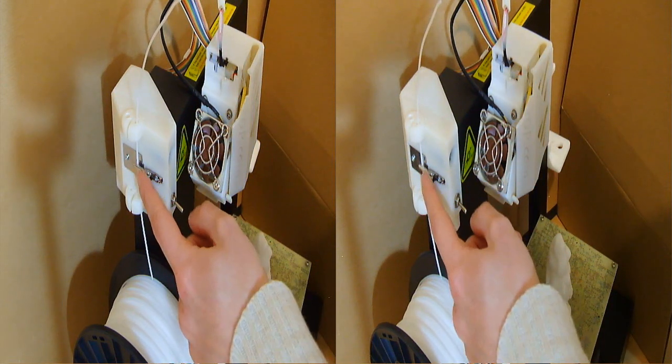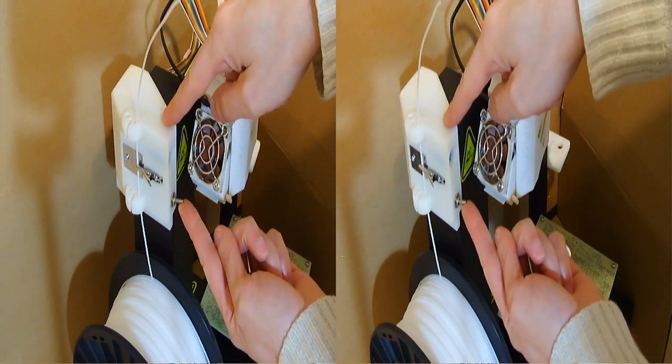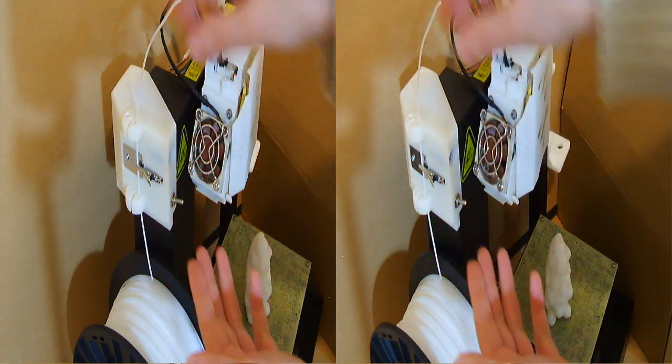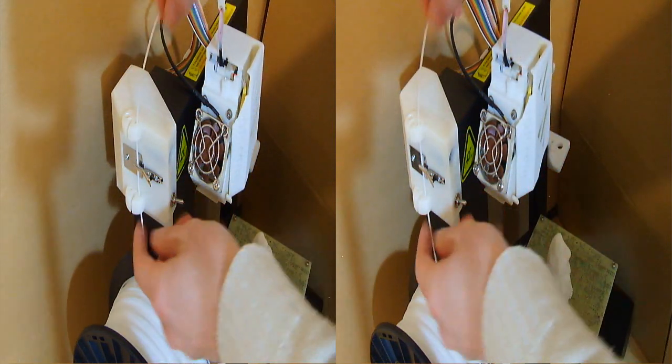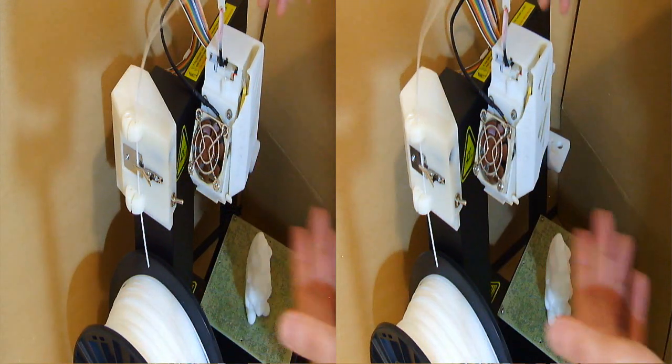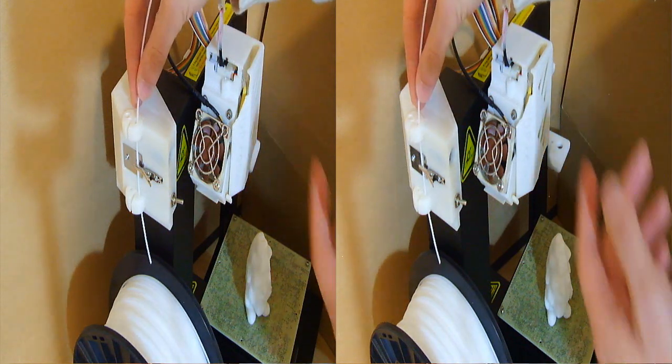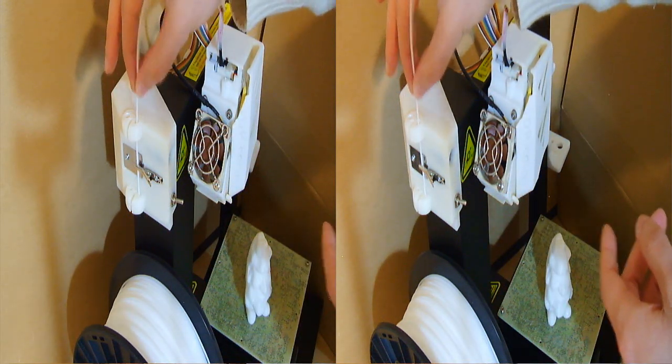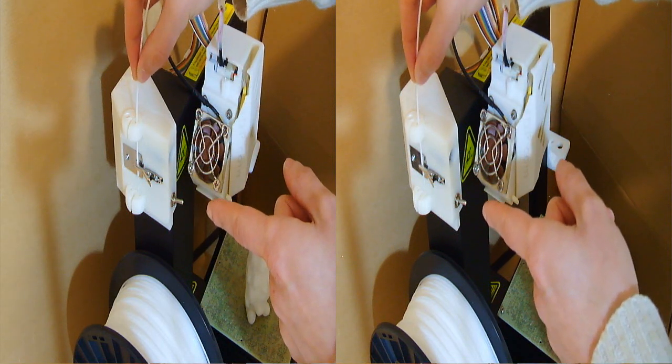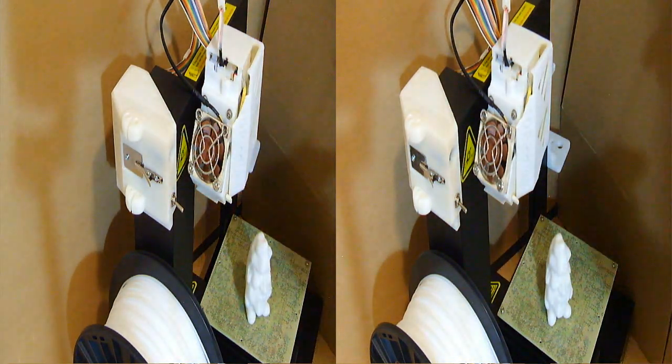So when you put the filament through the guide and the crocodile clip, you have to turn on the circuit. So when it runs out, I'm going to do it manually because it takes some time to print a piece, but the idea is this: the printer will use the filament and when it runs out, it will close the circuit, so you can come here and then change the filament spool and continue printing.